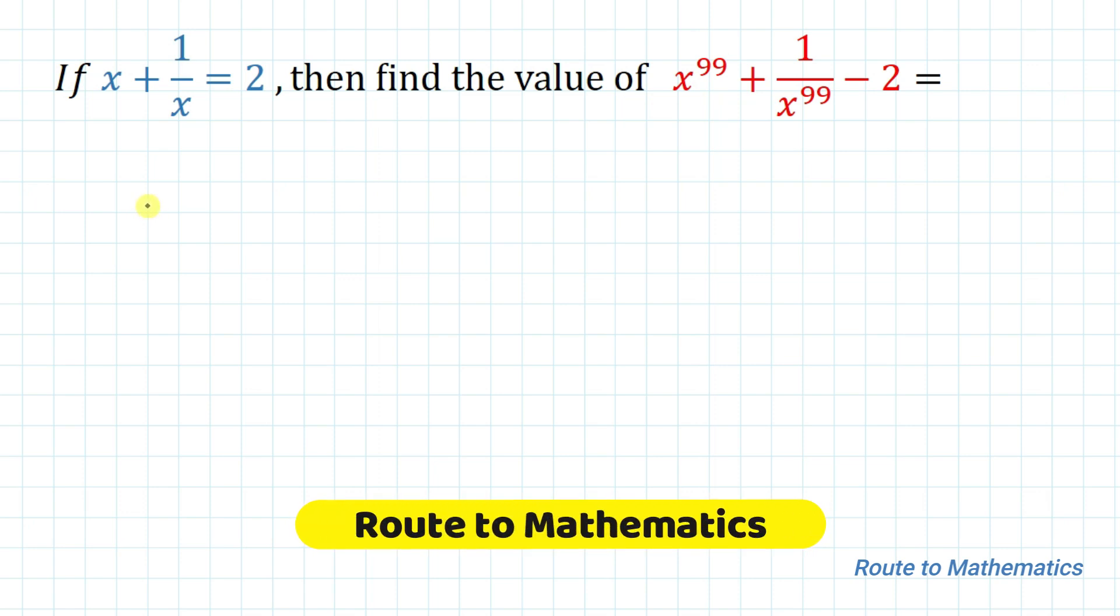Hello everyone, welcome to my channel Root2Mathematics. In this video, we are going to solve an interesting algebraic problem. The given question is: if x plus 1 by x equals 2, then find the value of x to the power 99 plus 1 by x to the power 99 minus 2.